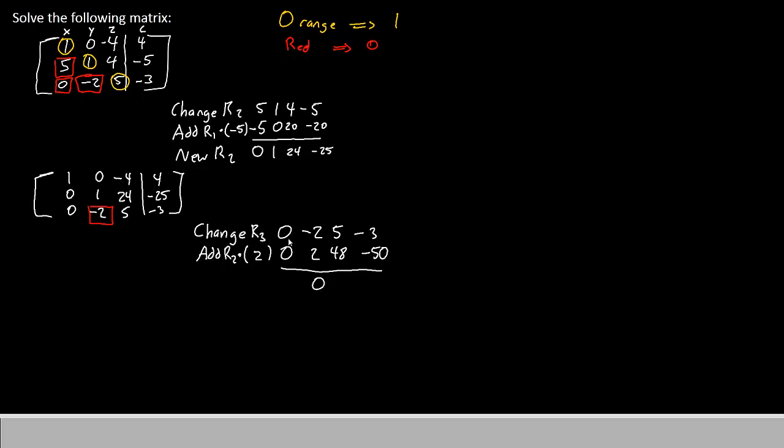Now we'll add everything up. 0 and 0 make 0. Negative 2 and 2 also make 0. 5 and 48 makes 53. And negative 3 and negative 50 makes negative 53. This will be our new row 3.